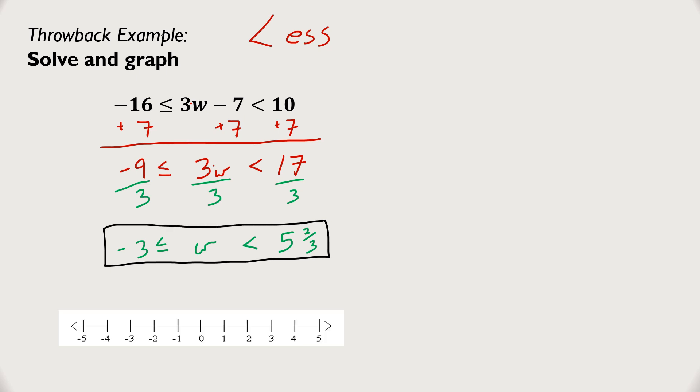To graph it, I need a number line. You can have multiple numbers or just the key numbers, negative 3 and 5 and 2 thirds. I'm going to go with multiple numbers for now. Because we have less than or equal to, I'm going to use a filled in circle. And at 5 and 2 thirds, it's going to be a little more than 5, so I can extend this line somewhere between 5 and 6.